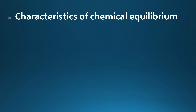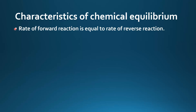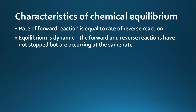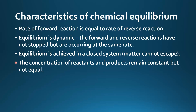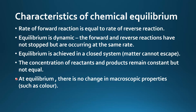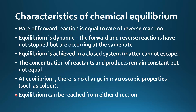Next we look at the characteristics of chemical equilibrium. The rate of the forward reaction equals the rate of the reverse reaction. Equilibrium is dynamic — the forward and reverse reactions have not stopped but are occurring at the same rate. Equilibrium is achieved in a closed system where matter cannot escape. The concentration of reactants and products remains constant but not equal. At equilibrium there is no change in macroscopic properties such as color, and equilibrium can be reached from either direction.